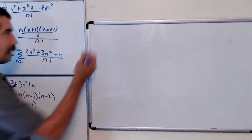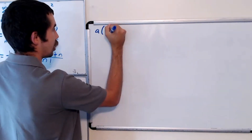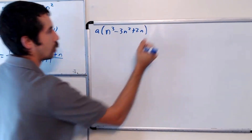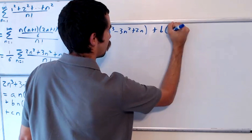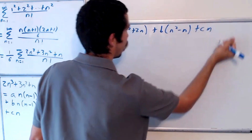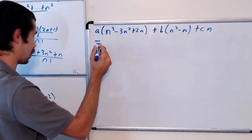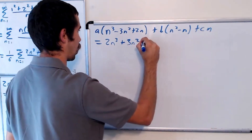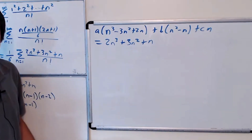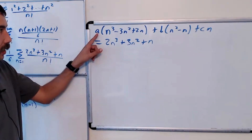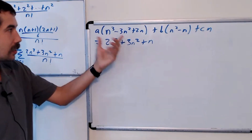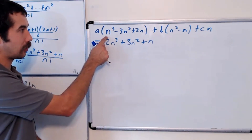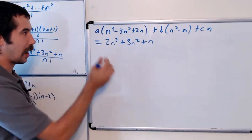Let's multiply it out. We have a times (n cubed minus 3n squared plus 2n), plus b times (n squared minus n), plus cn, equal to 2n cubed plus 3n squared plus n. Clearly a has to equal 2, because it's the only term that has an n cubed. The coefficient of n cubed has to be 2, so a equals 2.